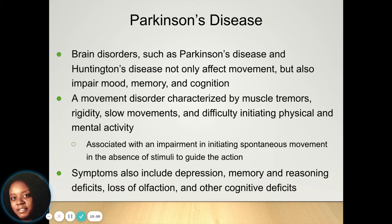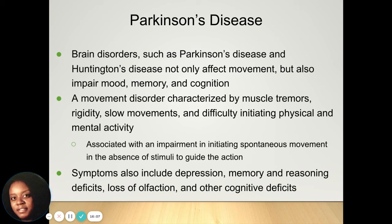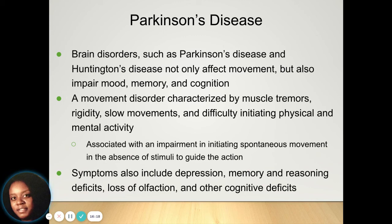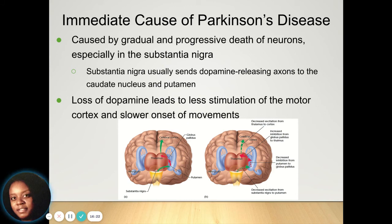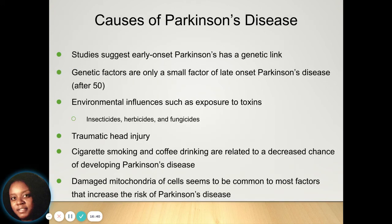Parkinson's disease is a brain disorder that affects a person's movement and can also impact their mood, memory, and cognition. It is a movement disorder that can involve muscle tremors, slow movements, and difficulty initiating a physical or mental activity. It can also lead to depression, memory and reasoning deficits, loss of olfaction, and other cognitive issues. It's caused by the gradual and progressive death of neurons in the substantia nigra, which sends dopamine-releasing axons to the caudate nucleus and the putamen to tell your brain how to move — which is what slows the movements.